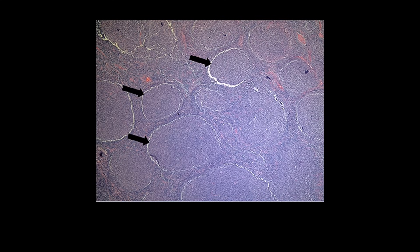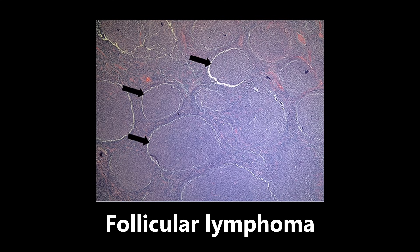This next example is the histology of follicular lymphoma. The arrows are pointing to aggregates of packed follicles that can obscure the normal lymph node architecture. This is one of the high-yield lymphomas that you need to know the histology of — these arrows are looking at packed aggregates of follicles that can obscure what a lymph node normally looks like.